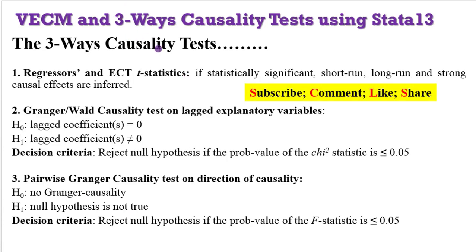Let's look at the three ways to test causality from a VECM. The first way is after estimating, observe the t-statistics of the regressors and the t-statistics of the error correction term — if both are significant, you can obtain short-run, long-run, and strong causal effects. The second approach is the Granger block causality test on the lagged explanatory variables. The null and alternative hypotheses are shown on the screen, and you reject the null hypothesis if the p-value of the chi-square statistic is below 0.05. The third way is using the pairwise Granger causality test, which indicates the direction of causality. You reject the null hypothesis if the p-value of the F-statistic is below 0.05.